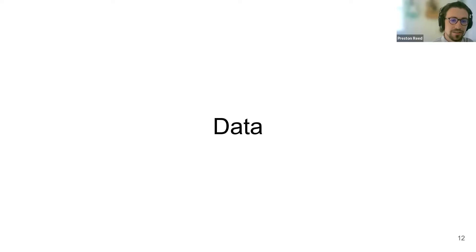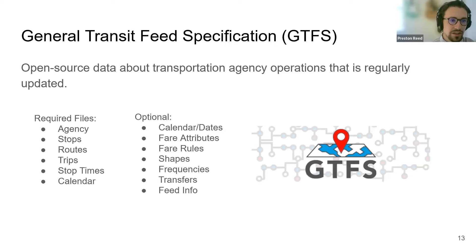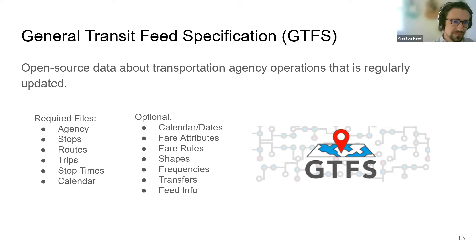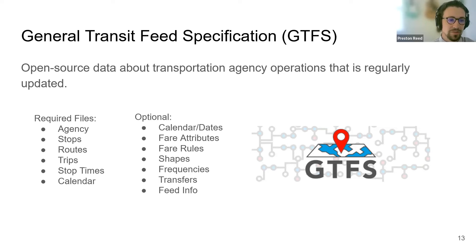So like Holly said, I'll be going over the data and tools we used and how we used them to quantify public transit equity. The first major data source was information about the Riverside Transit Agency. We used something called the General Transit Feed Specification, or GTFS for short. This is open source data published by transportation agencies, updated usually every few months, and it gives a snapshot of what the public transportation system looks like at any given time. We can also look at historical data to examine those pre-pandemic and post-pandemic time periods. Required files include stops, routes, and trips — really important for mapping out the transit system.